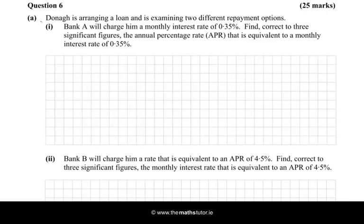Hello there. In this question we're told that Donna is arranging a loan and is examining two different repayment options. Bank A will charge him a monthly interest rate of 0.35%. Find, correct to three significant figures, the annual percentage rate (APR) that is equivalent to a monthly interest rate of 0.35%.